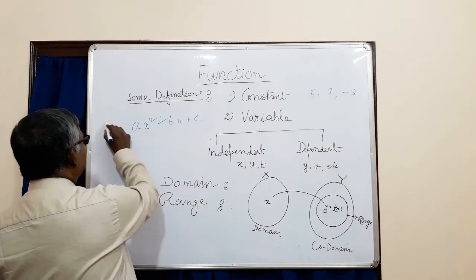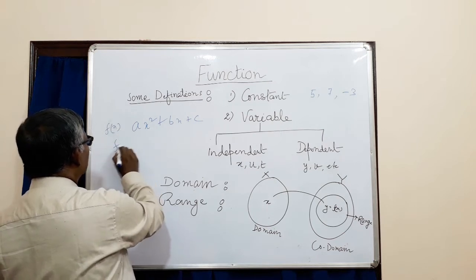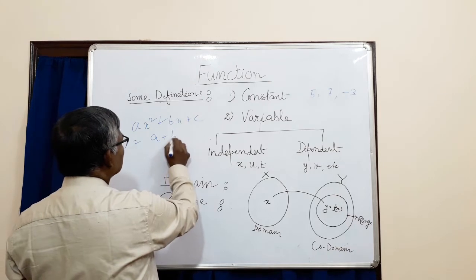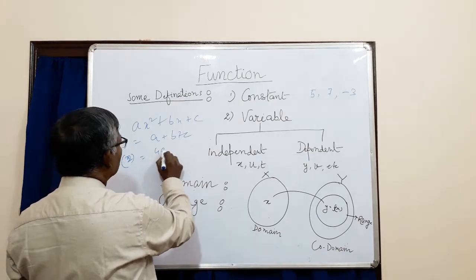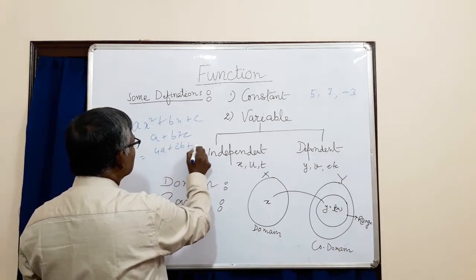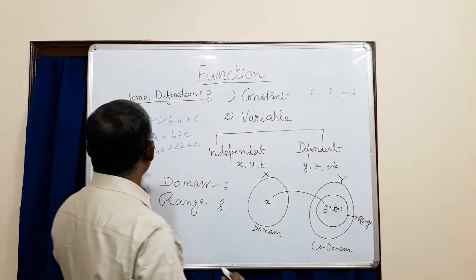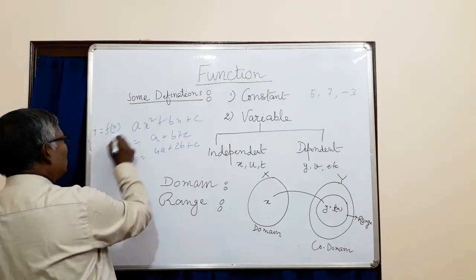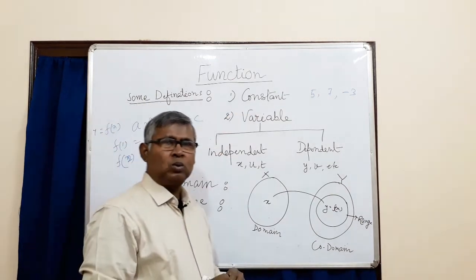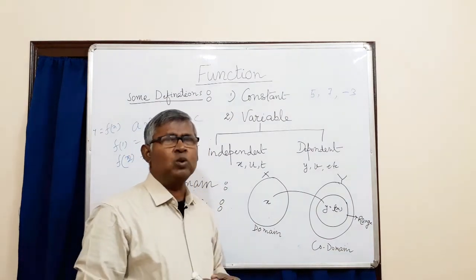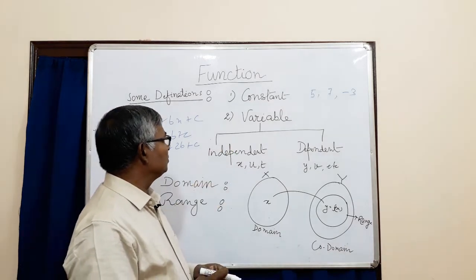If you say x equals 1, it is called f(x). Suppose it is f(x). If you take f(1), it will be a plus b plus c. If you take x equal to 2, it will be 4a plus 2b plus c, and so on. This x is called a variable, and y also. So a variable is one whose value remains changing — we can take any value throughout the calculation.